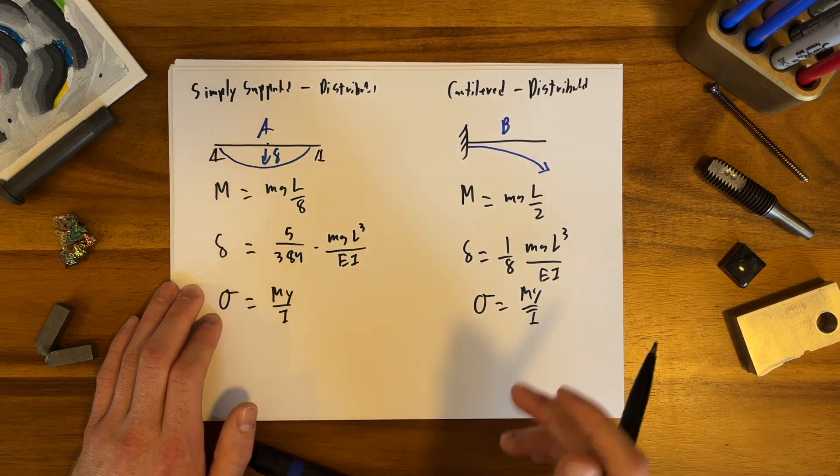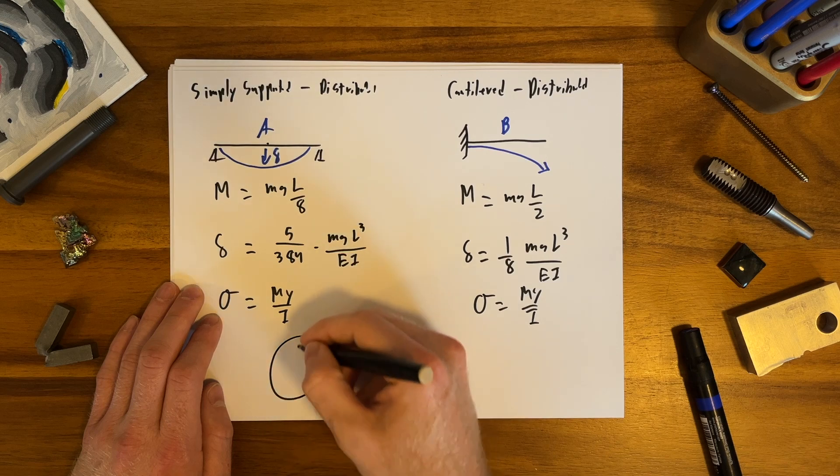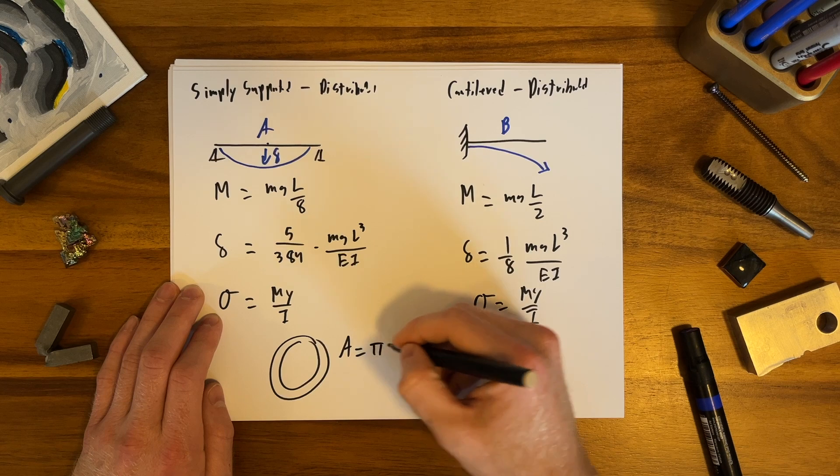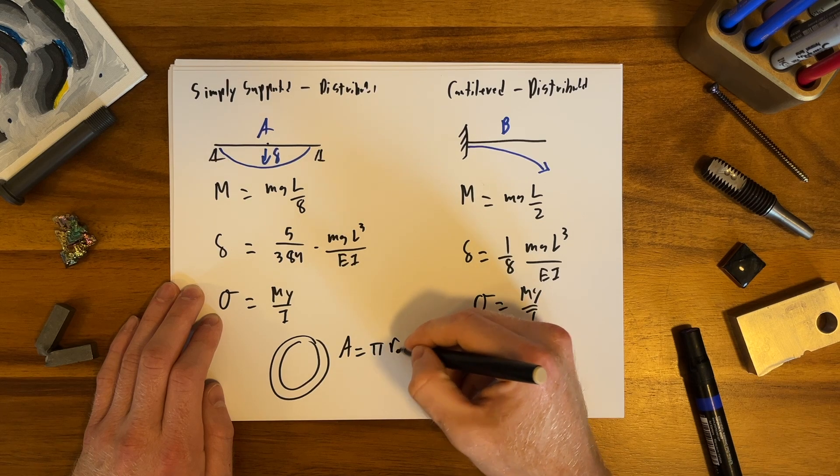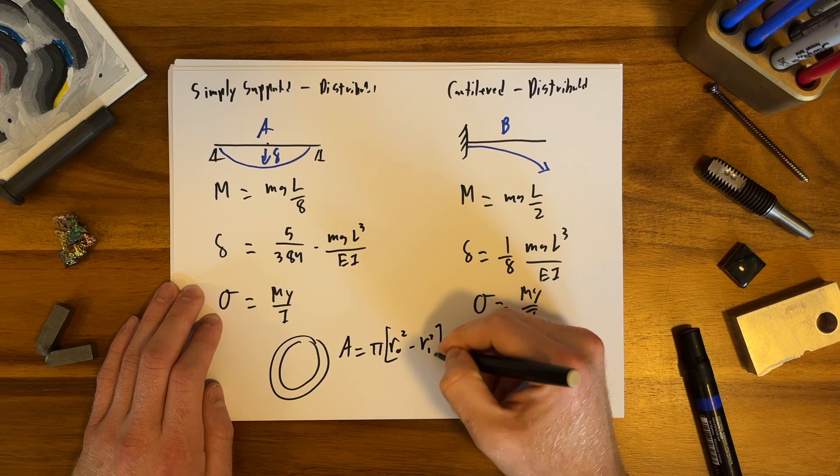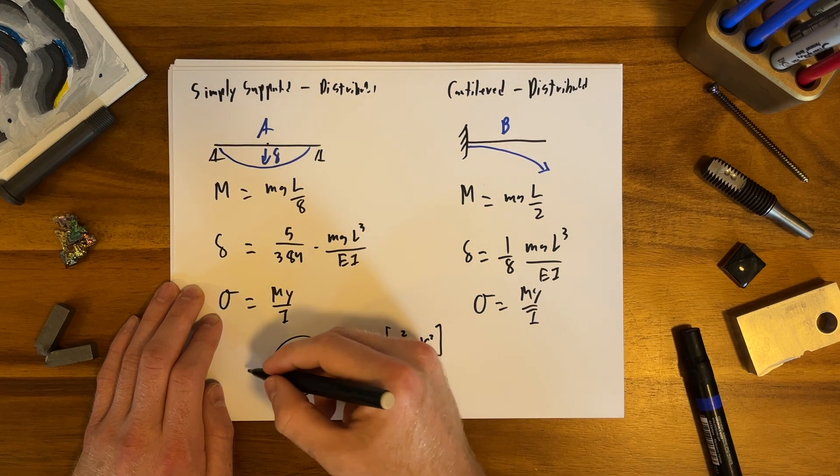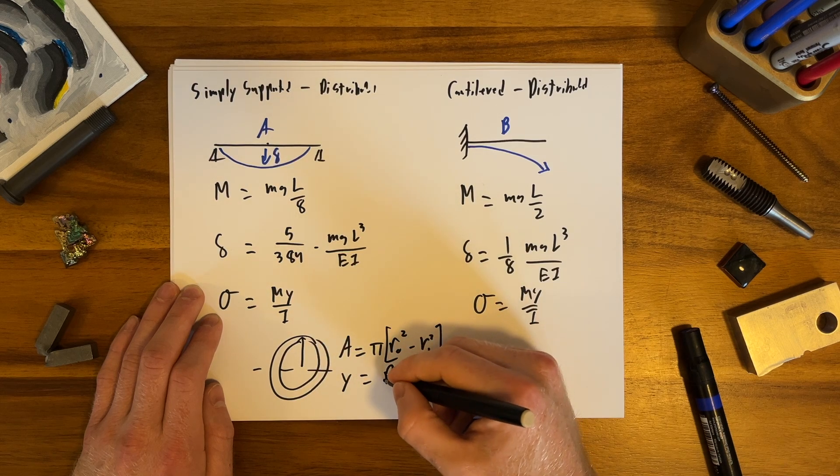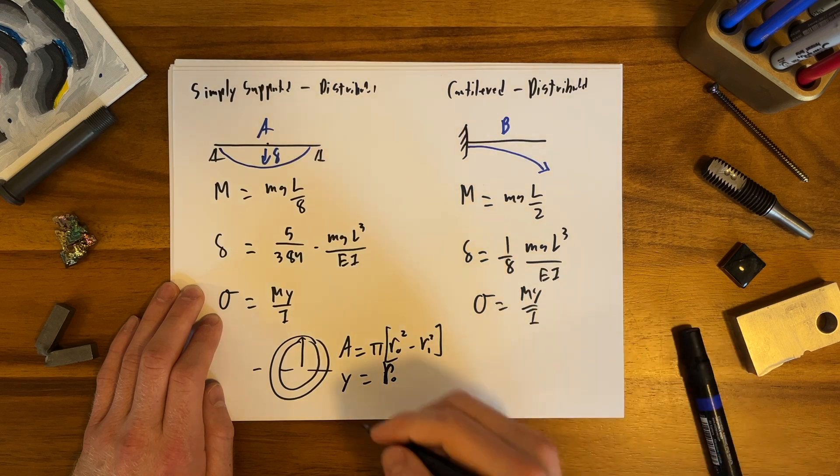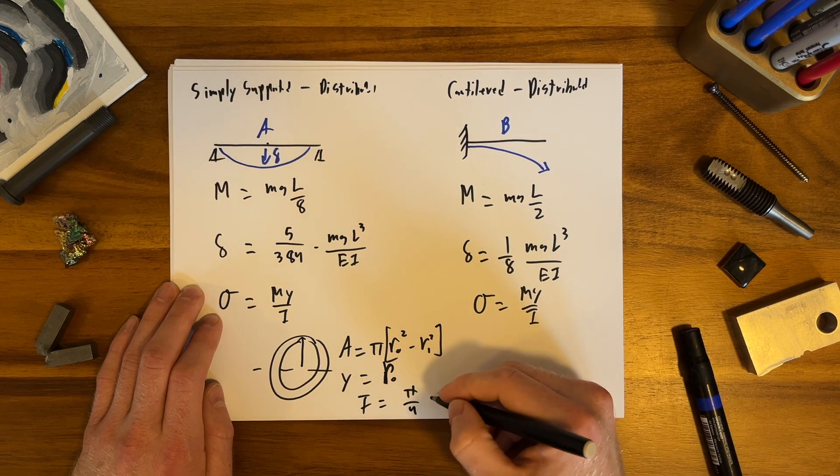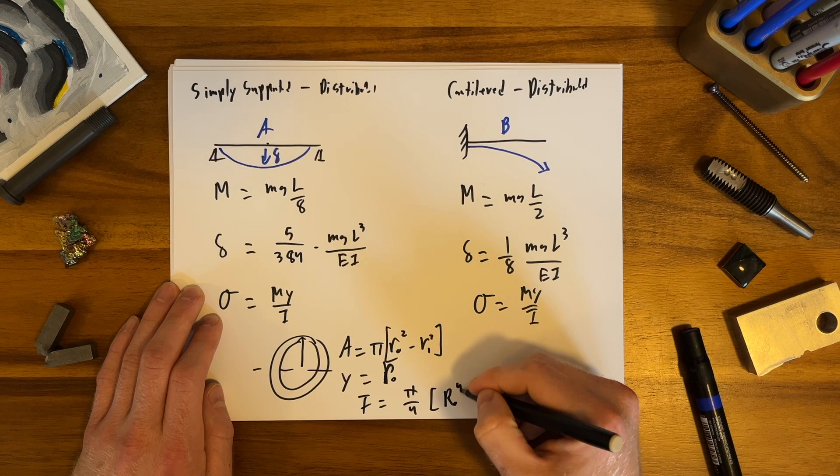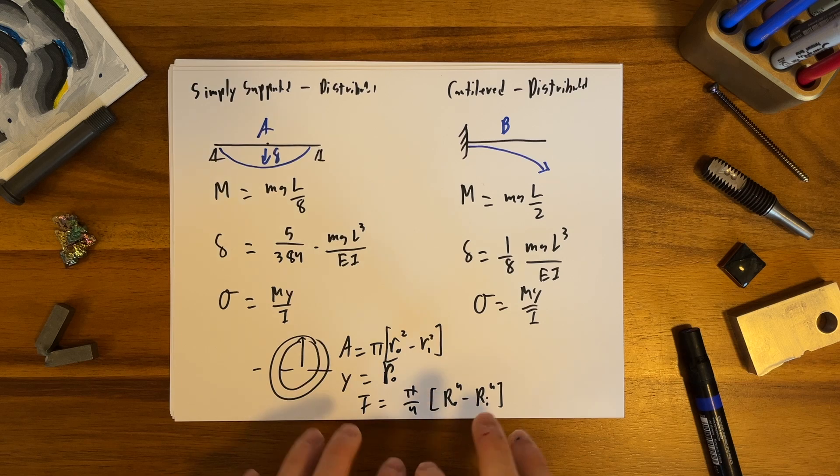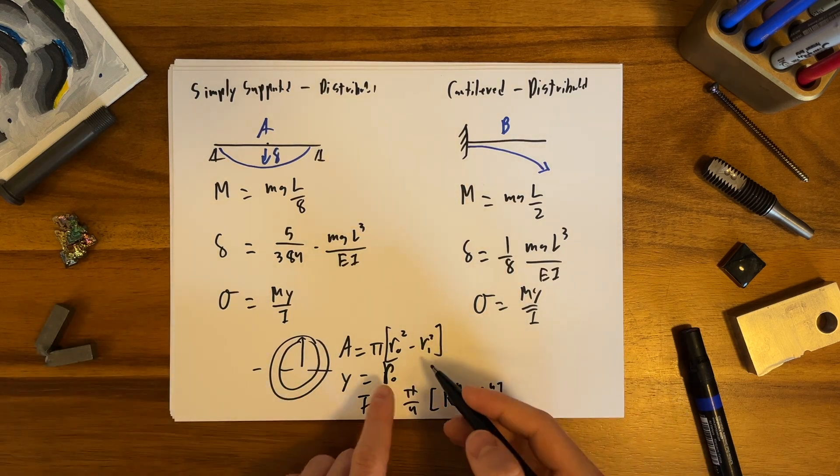What you can do is imagine any cross section you want, plug in all the numbers and find the answer. I chose thin wall tube. I know the area is π(r_outer squared minus r_inner squared). I know that y is the distance from neutral axis to fiber, which is just r_outer. And then I is π/4 times (r_outer to the fourth minus r_inner to the fourth). You can make a really quick spreadsheet and type in your dimensions - choose a diameter, choose a thickness, calculate the radii, calculate the area, calculate the y and the I.